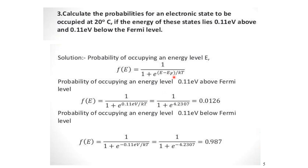In one case, E − E_F = +0.11 eV (above the Fermi level), so we take this as positive. Converting temperature and using the Boltzmann constant, the probability comes out to 0.0126, or about 1.26%. If the state is below the Fermi level, we take E − E_F as negative, giving e^(−0.11/kT) in the denominator, and the result is approximately 0.987.